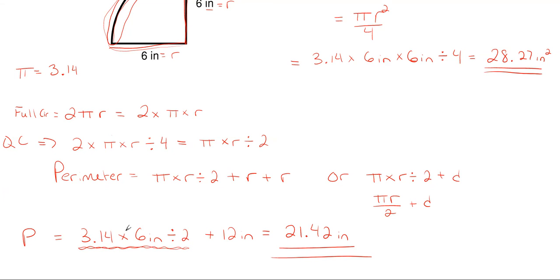So that's how you find the area and perimeter for a quarter circle. I hope this video was helpful. If you want to see more problems solved, check out the other videos on our channel — we're trying to upload daily. Please like, leave a positive comment, and subscribe, as that does help us out. Thank you for watching and have a fantastic day!